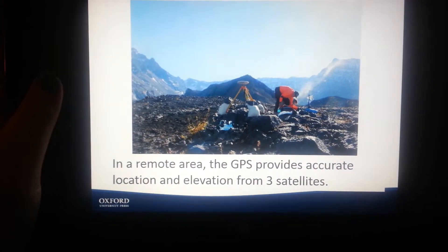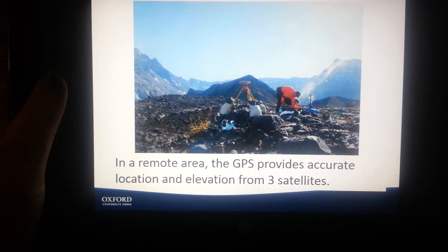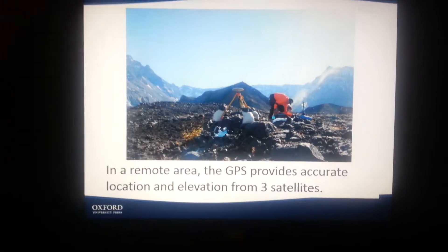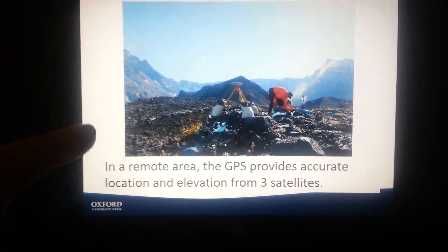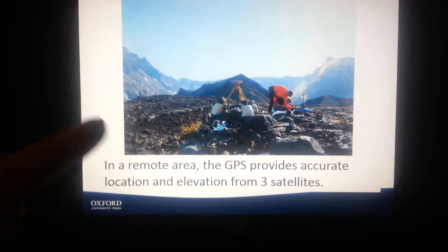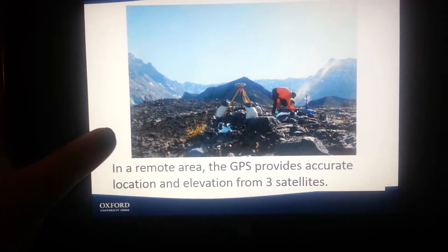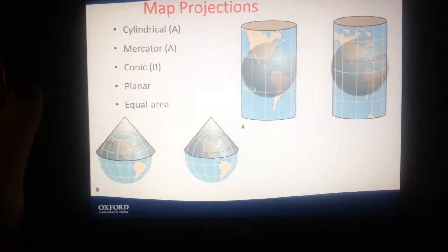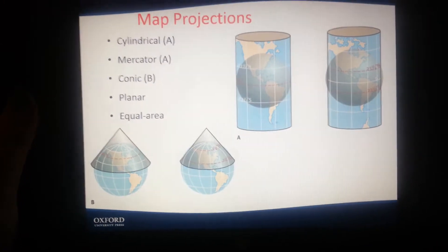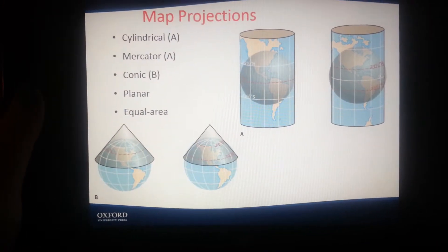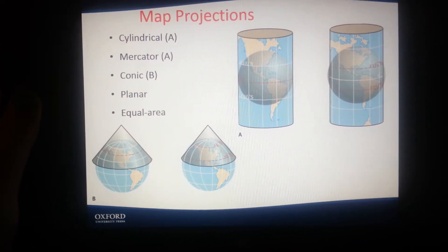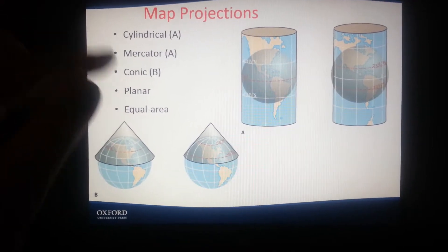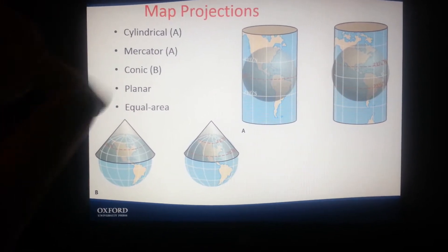Here we have a picture of a narrowed area. GPS provides accurate location and elevation through satellites. Cheaper devices, like your phone, usually require four satellites. And then we have Map Projections: Cylindrical, Mercator, Conic, Planar, and Equal Area.